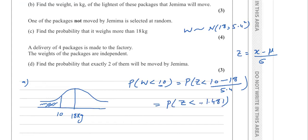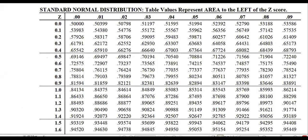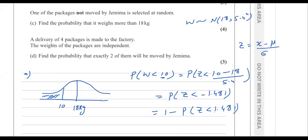To convert this negative z-value to a positive one, we use symmetry: P(Z < −1.481) = 1 − P(Z < 1.481). Rounding to 3 significant figures, this becomes 1 − P(Z < 1.48).